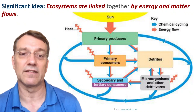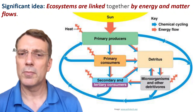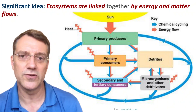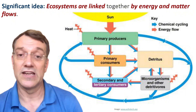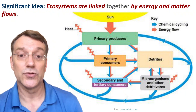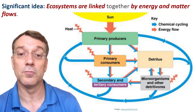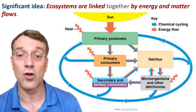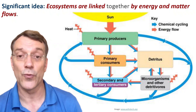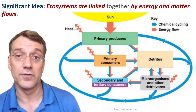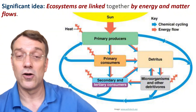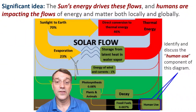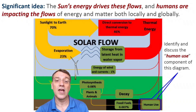Ecosystems are fundamentally connected by energy and matter flows. Remember the food webs we studied in topic 2.2? Those illustrate how energy flows from producers to consumers and to decomposers. Chemical cycling, shown by the blue arrows, represents how matter moves through the ecosystem over and over again, while energy flow, shown by the red arrows, is one-directional. It enters the ecosystem, transfers, transforms, and then ultimately exits the system. The sun's energy drives these flows, and humans are impacting them both locally and globally.